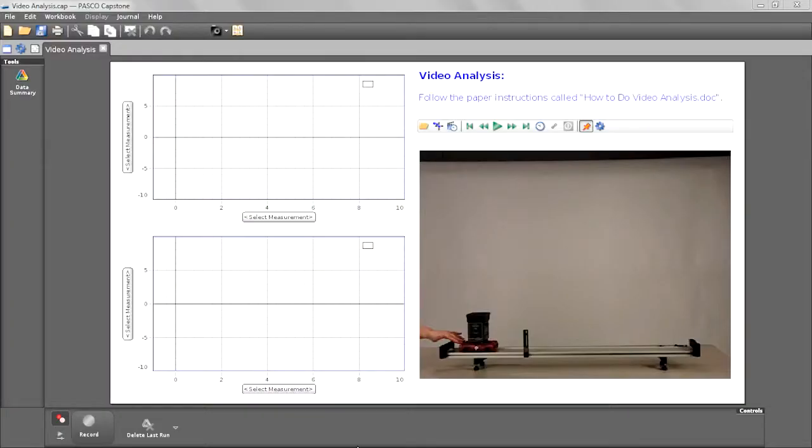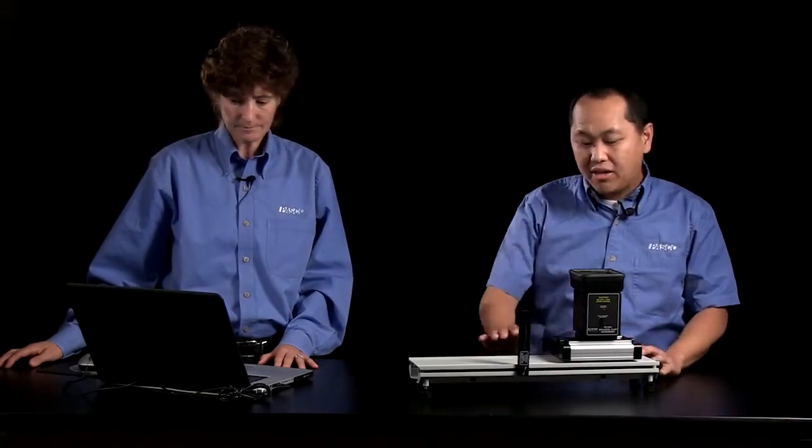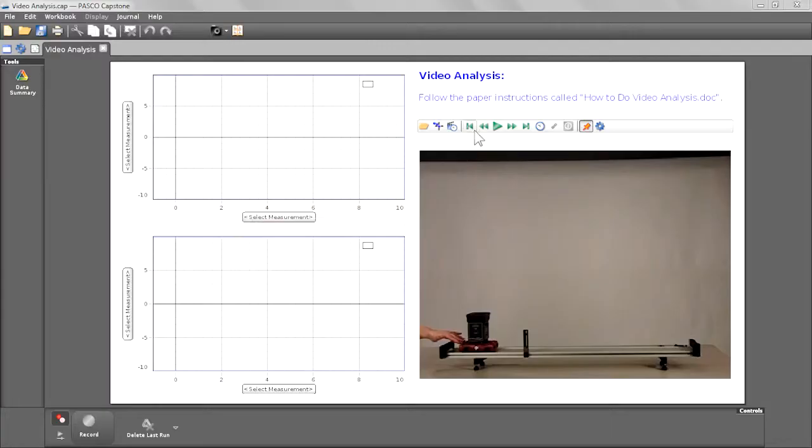So I've already started an experiment in Capstone and I have two graph displays and I've imported a movie that's been pre-recorded, but Chong's going to explain what the movie's about. The movie is going to have a cart on a PASCO track moving and a ball shooting up out of it, and we're going to track the ball. Okay so let's see what that movie looks like. I'll go ahead and play it here.